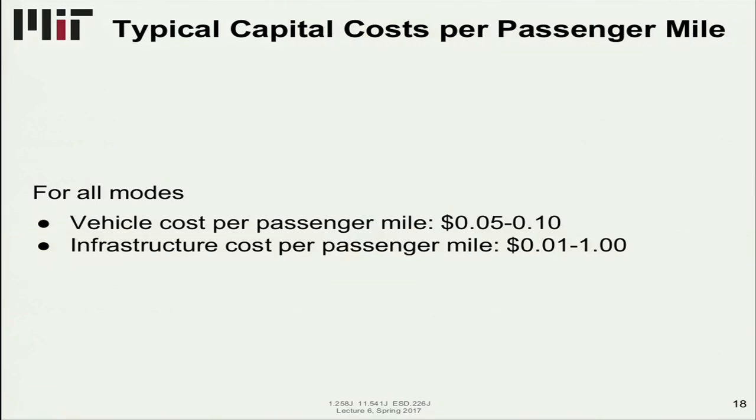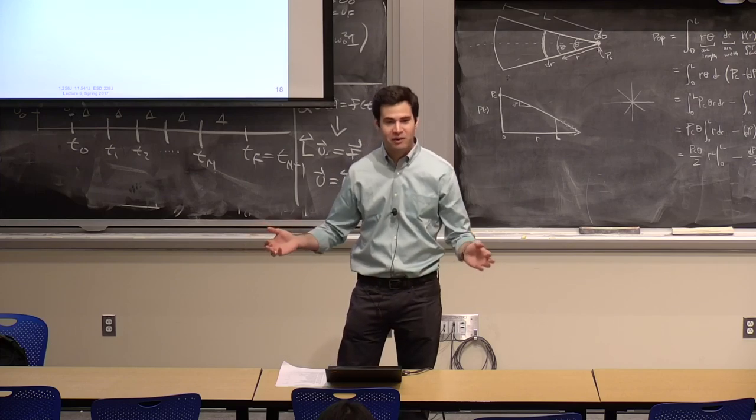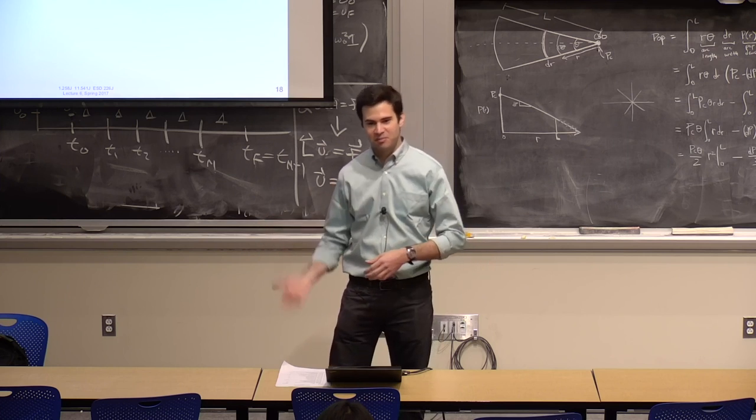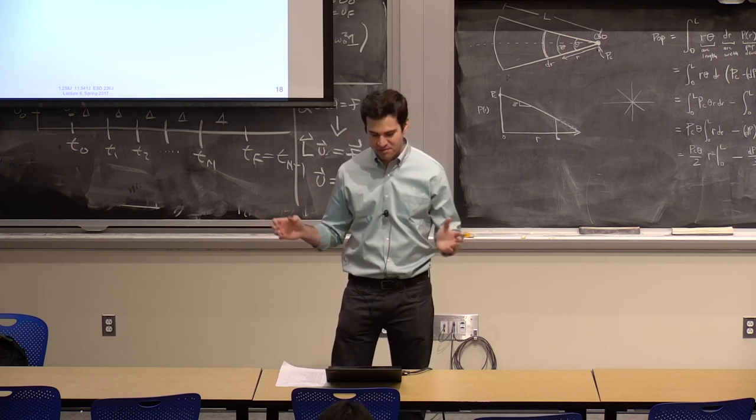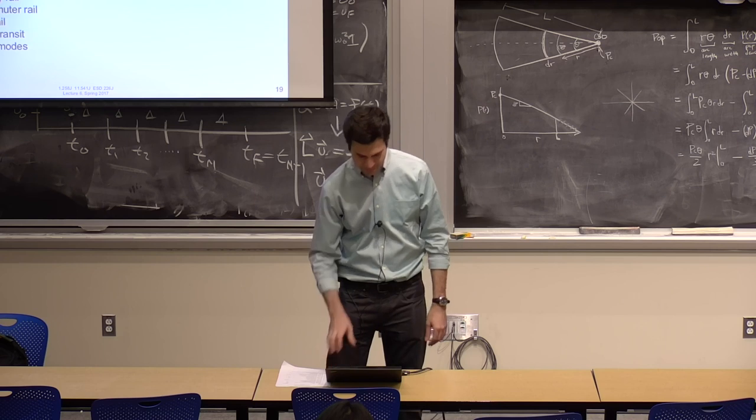Capital costs per passenger mile. Looking at a range of examples, vehicles cost anywhere from 5 cents to 10 cents per passenger mile. And for infrastructure, that could range anywhere from 1 cent to a dollar, because there are so many ways of doing this. It could be a subway, it could be at grade, it could be bus or rail. So it's very variable.